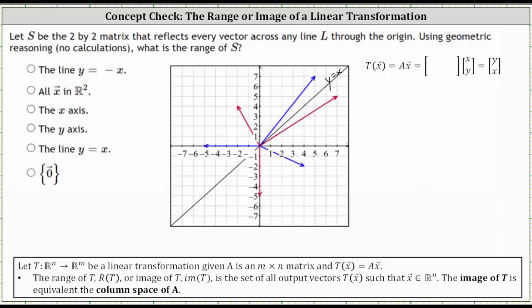For example, if the input vector is the vector (5, 7) shown here in blue, the output vector after being reflected across the line Y equals X is the vector (7, 5), graphed here in red.